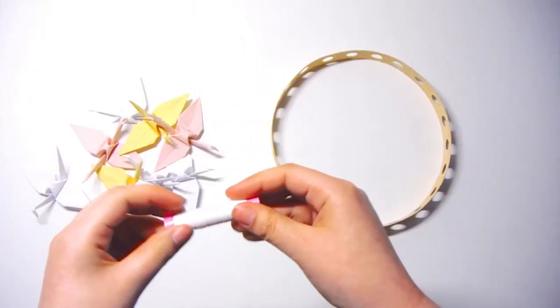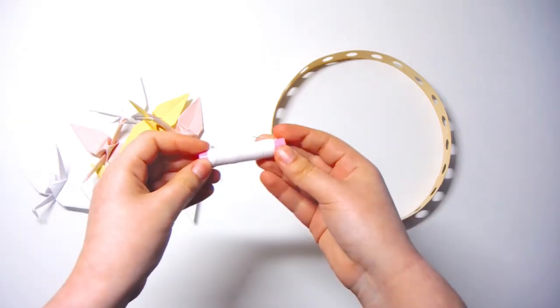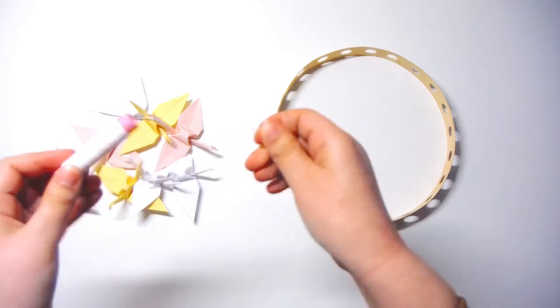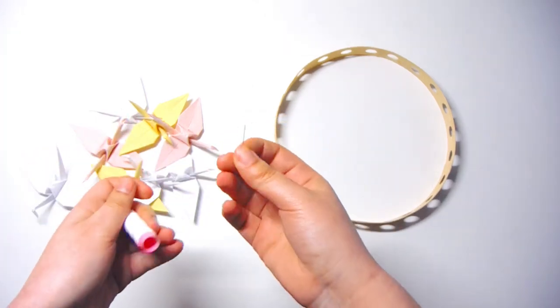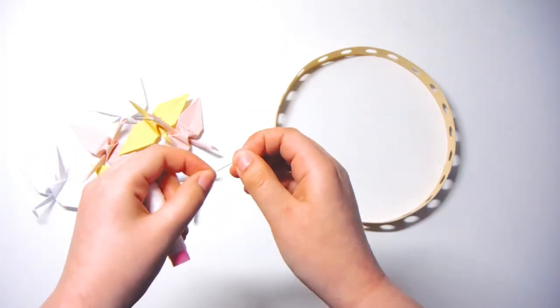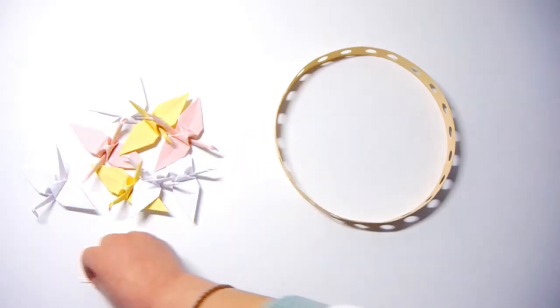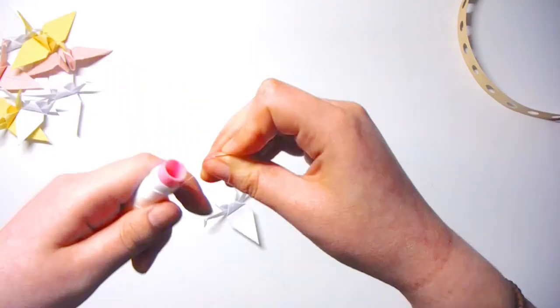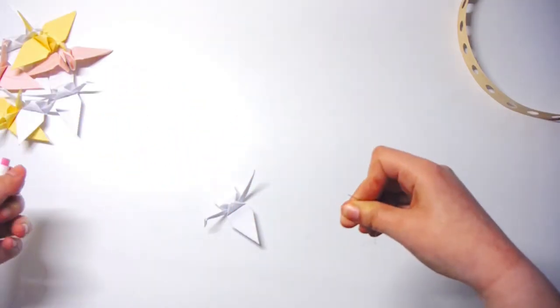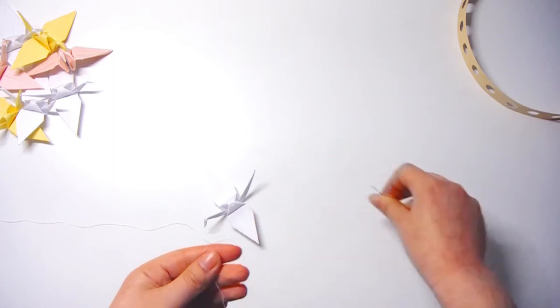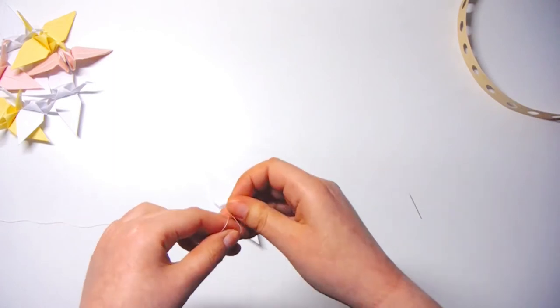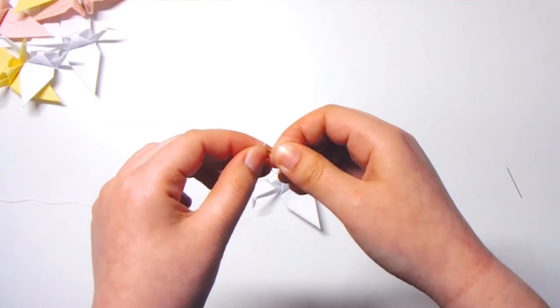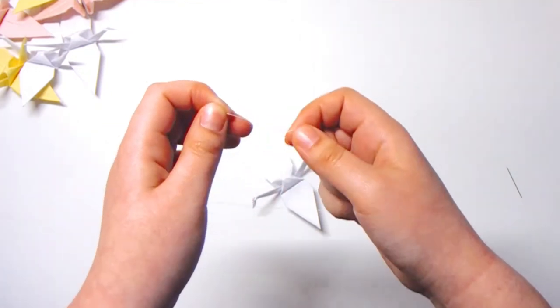Okay, so I'm going to use some regular thread just to attach these to the ring. I'm going to use a sewing needle just to poke through our paper crane. So what I'm going to do first, I'm going to take a paper crane, unwrap some of the string first, and I'm going to tie a knot on one end. I'm going to go ahead and just tie it a bunch of times because I don't want it to go through the paper.